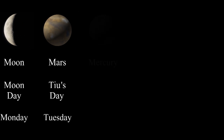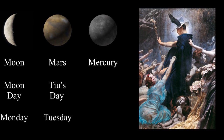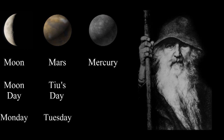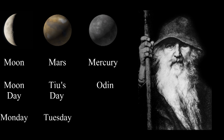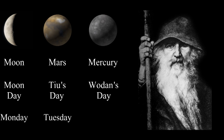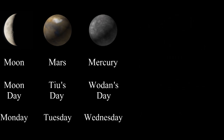Wednesday comes from Mercury. This isn't a perfect analogy, but the Norse counterpart is Odin. In Old English, Odin was pronounced Woden. So that's Woden's day — and then it changed to Wednesday. This explains why it's spelled so weird, because it used to be Woden's day.